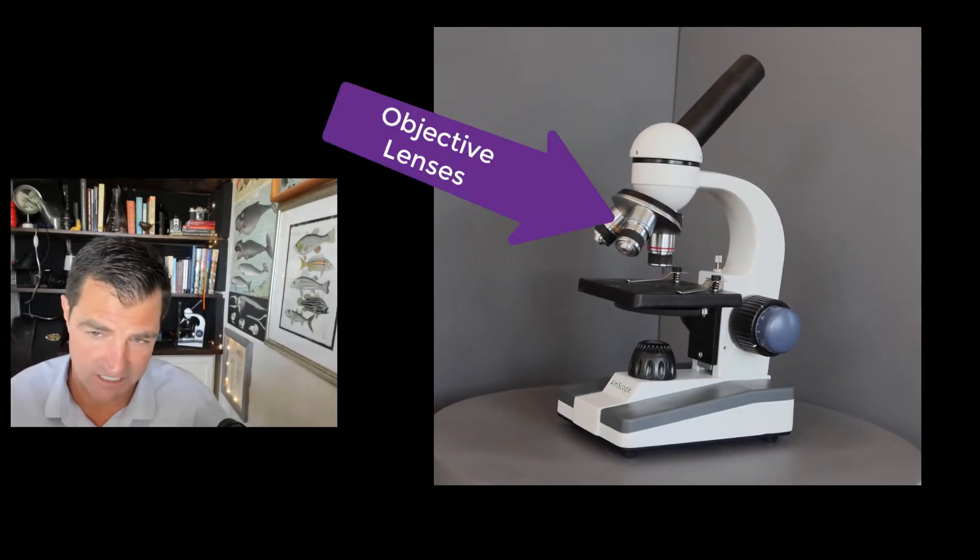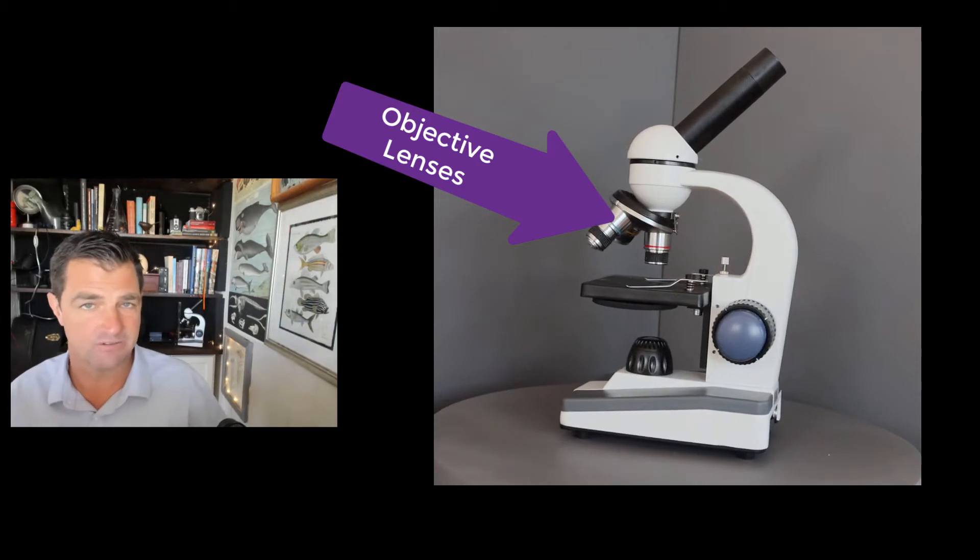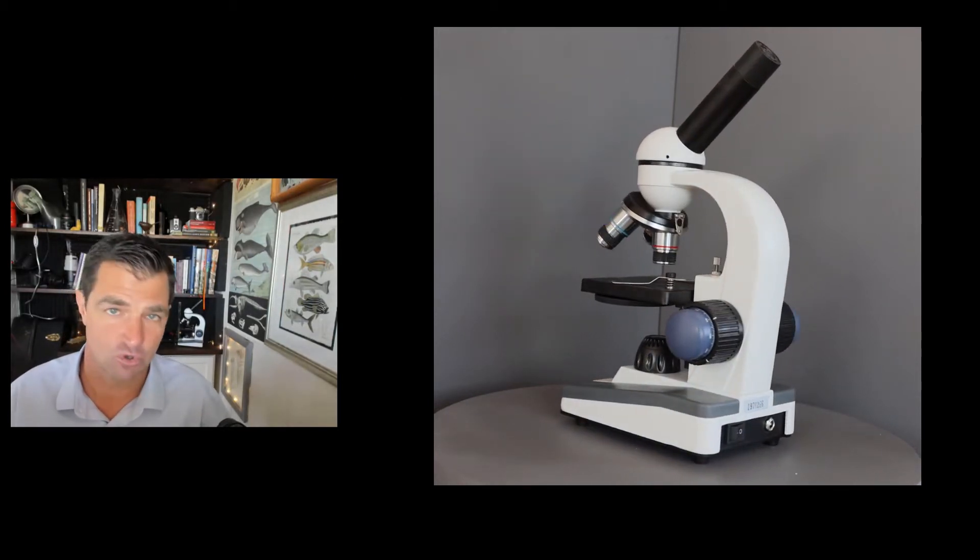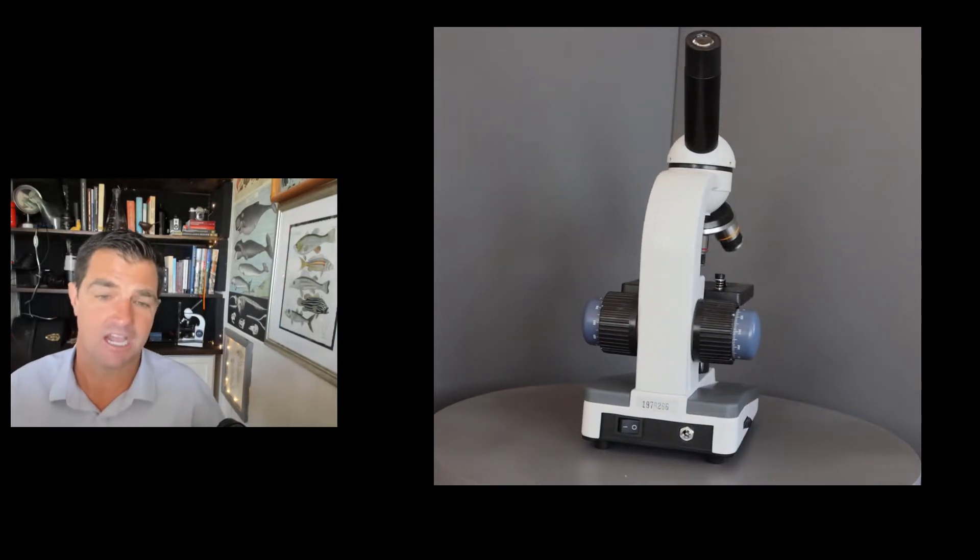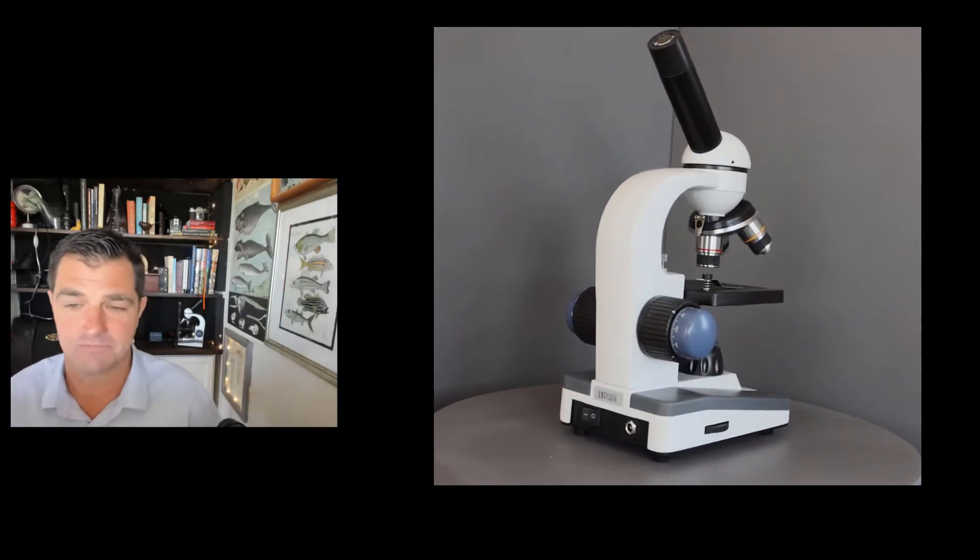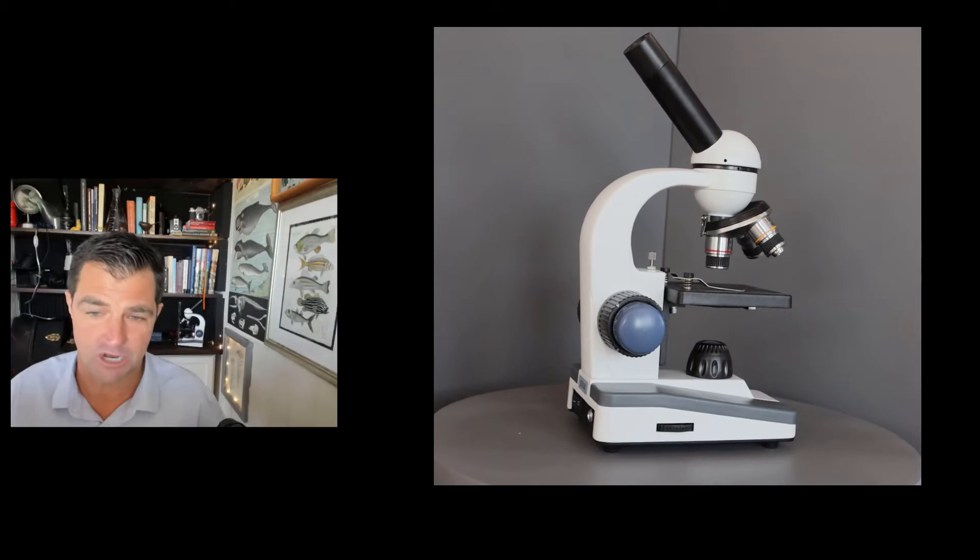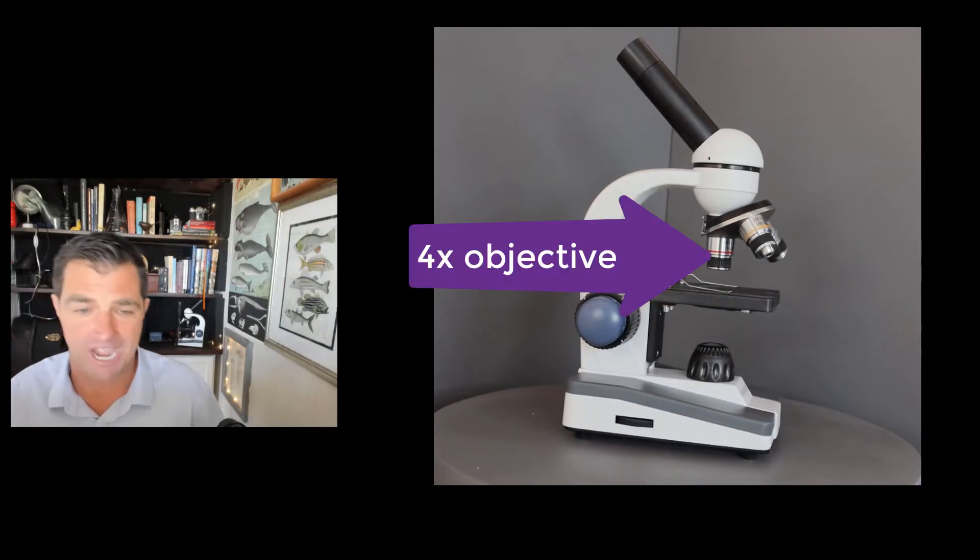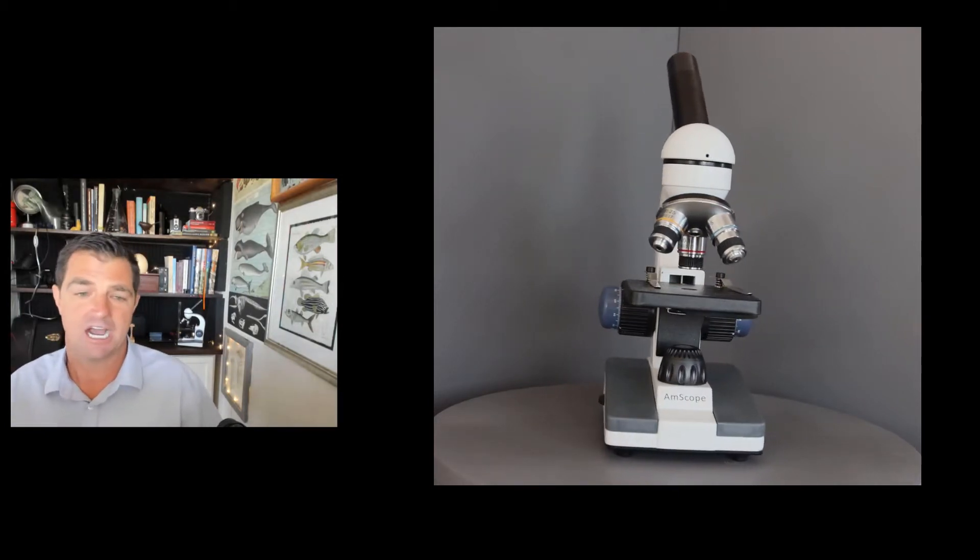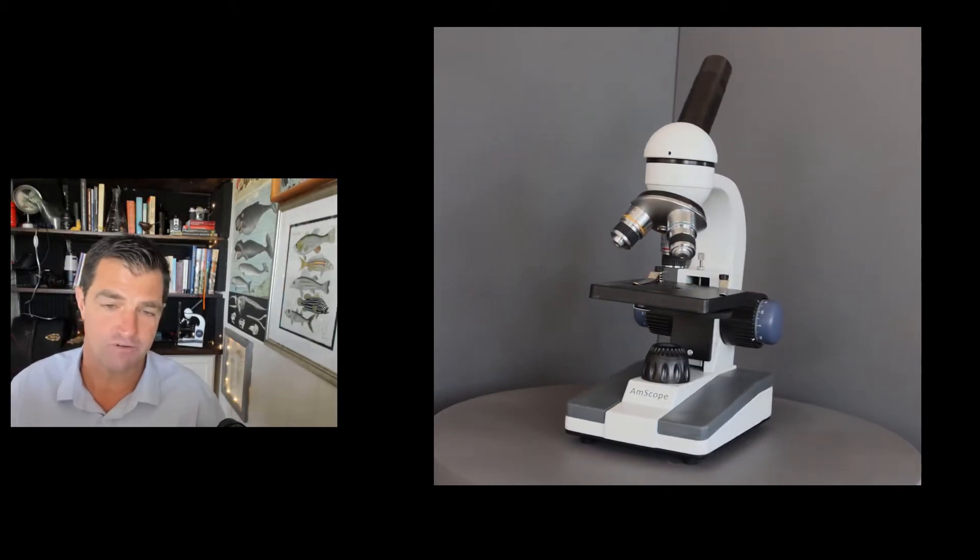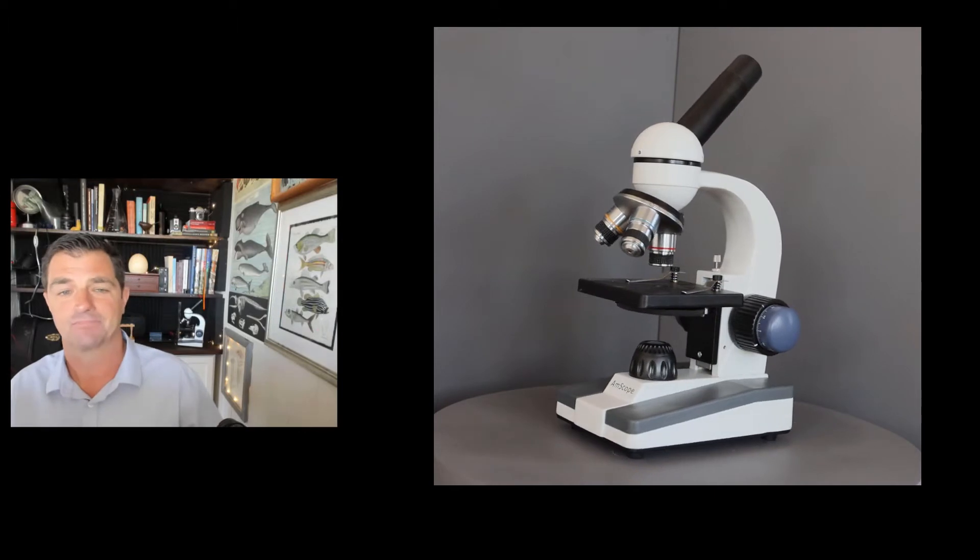Next, we have the objective lenses, and these can be rotated to different levels of magnification. The shortest one, the lowest power setting of these objective lenses, is marked with a red ring around it, and it's a 4x objective. Most of the time, this is the objective lens that you're going to want to start on when you're finding something and focusing it.